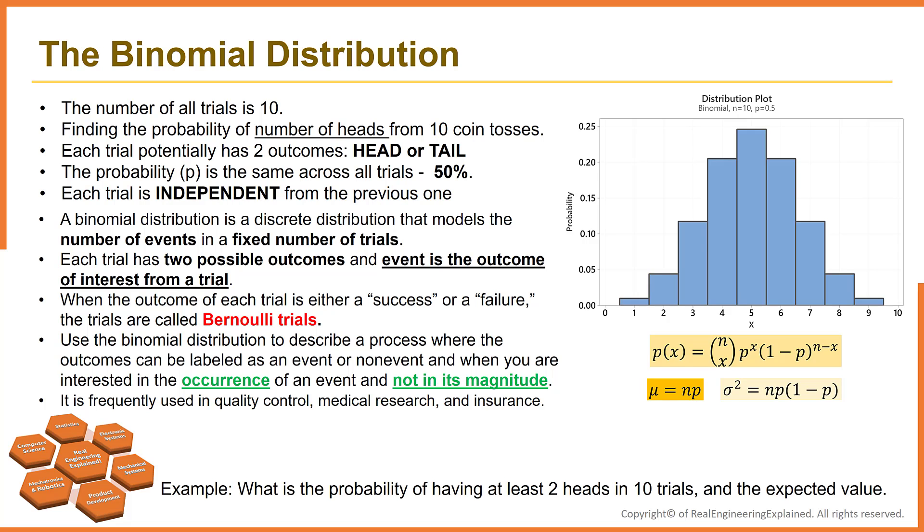Now someone asks you what is the probability to have at least two heads in 10 trials. This means probability of having two, three, four, five, or even 10 heads in 10 trials.